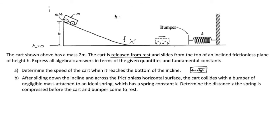But now that we've attained that speed, let's put it in here as v initial for this now part b situation. The final velocity for the incline, but the initial velocity for what I'm about to do involving the spring, is going to be root 2gh. Let's find out that after sliding down the incline and across the frictionless horizontal surface, the cart collides with a bumper of negligible mass attached to an ideal spring which has a spring constant k. We determine the distance x the spring is compressed before both come to rest.